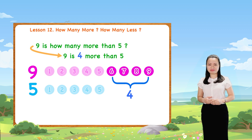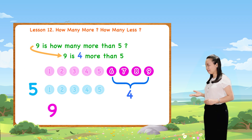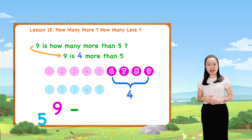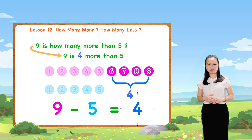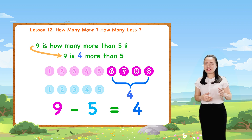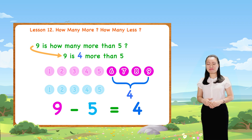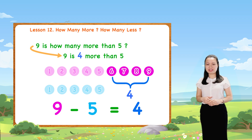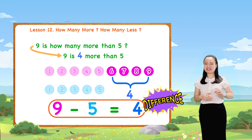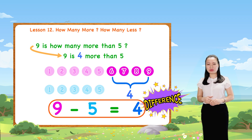Notice, nine minus five equals four. So, to find how many more, we find the difference between the two numbers.